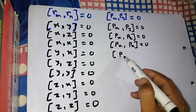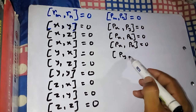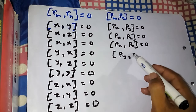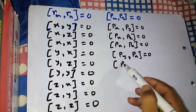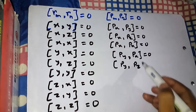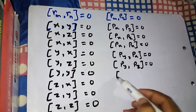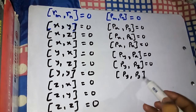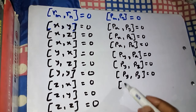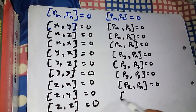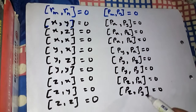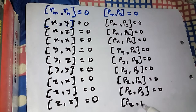Similarly, [py, px] is zero, [py, pz] is zero, and [py, py] is zero. Likewise, [pz, px] is zero, [pz, py] is zero, and [pz, pz] is zero.